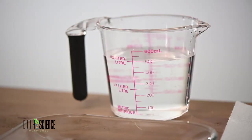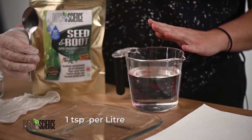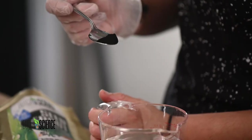To start, you'll need a container of water and the mix for the seed and root is one teaspoon per liter. I have half a liter here, so we're going to use half a teaspoon.